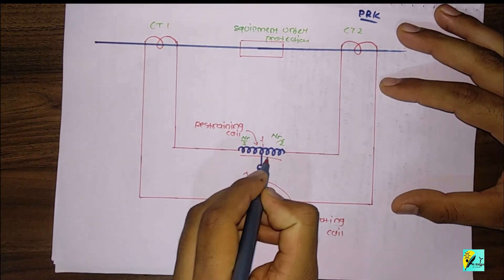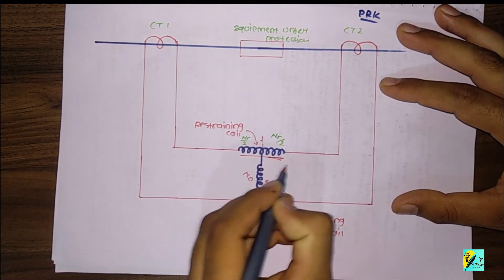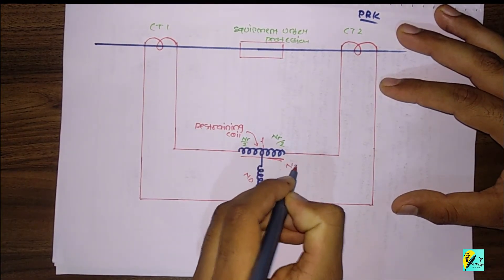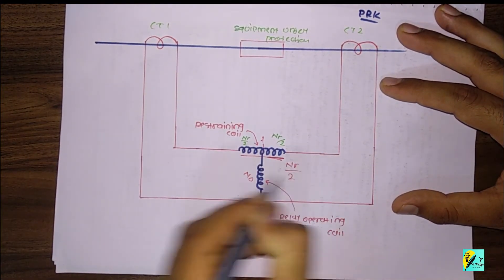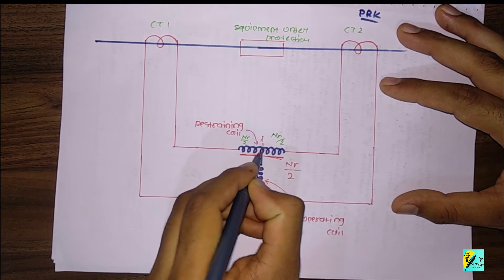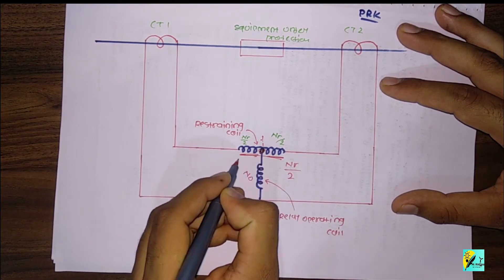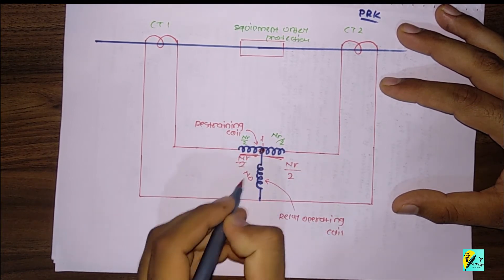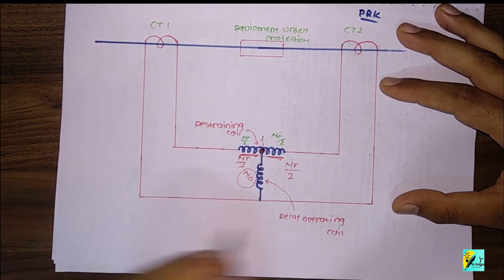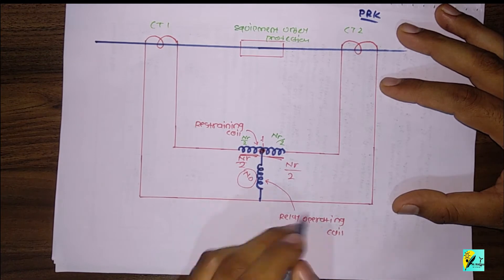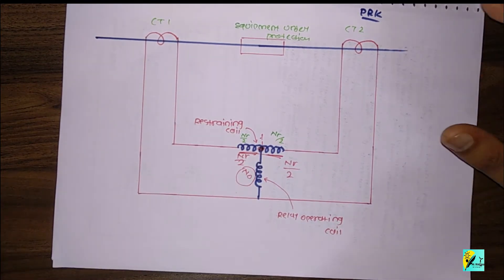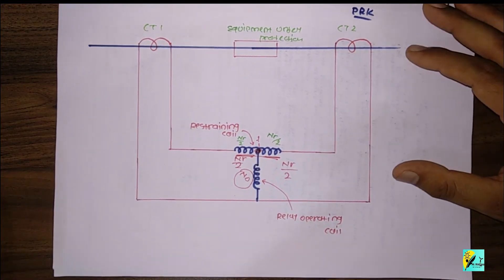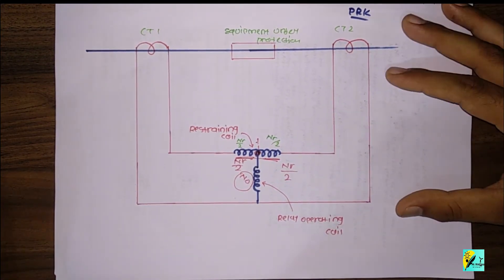Here, the number of turns of the restraining coil is called Nr/2, because this is the midpoint. And N0 is the number of turns of the relay operating coil.